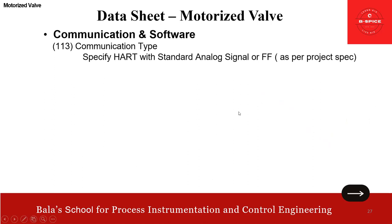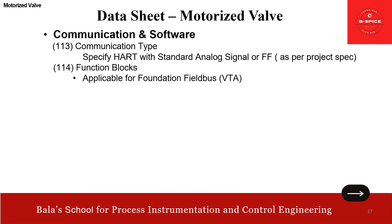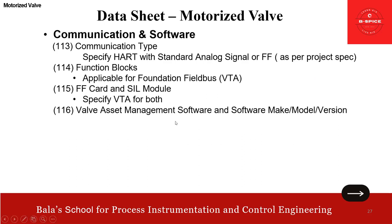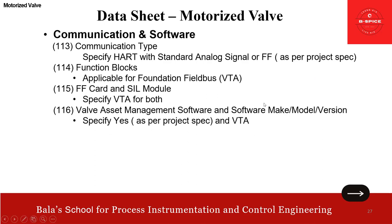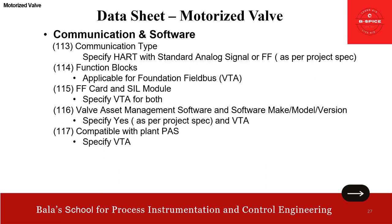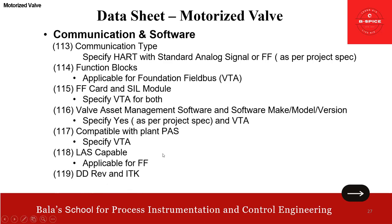Communication type — specify HART with standard analog signal or foundation fieldbus; it needs to be in line with the project spec. Function blocks — applicable for FF. FF card and SIL module — specify VTA for both. Valve asset management software — software make, model, and version in line with the spec; the version and model will be given by vendor. Compatibility with the plant automation system — specify VTA. Last link active scheduler capability — applicable only for FF. DD revision and ITK (interoperability test kit) — also applicable for FF.